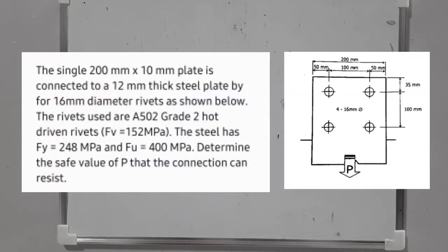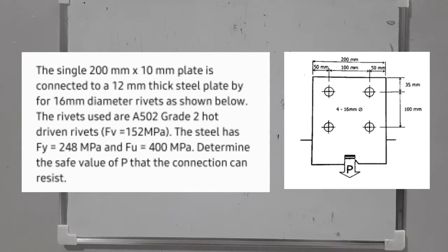We have two examples. For the first situation, you are given a single 200mm by 10mm steel plate connected to a 12mm thick steel plate by four 16mm diameter rivets. The rivets used are A502 grade 2 hot-driven rivets, which corresponds to a shear force of 152 MPa. The steel used is ASTM-836, which has an equivalent Fy of 248 MPa and an ultimate strength of 400 MPa.